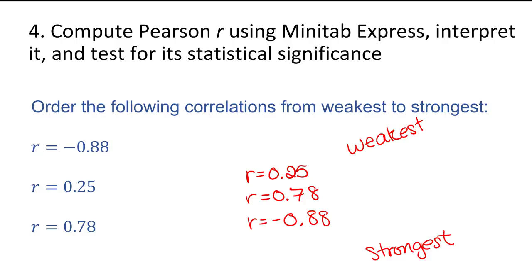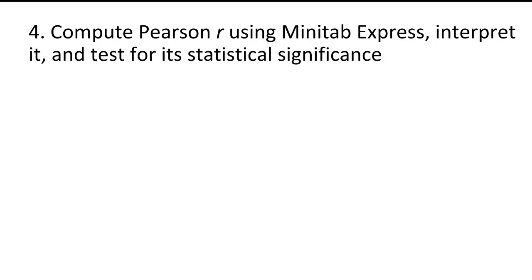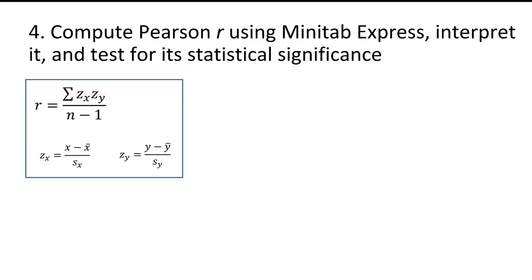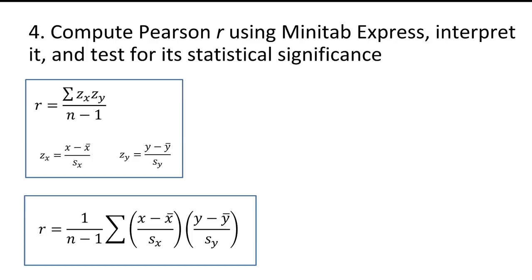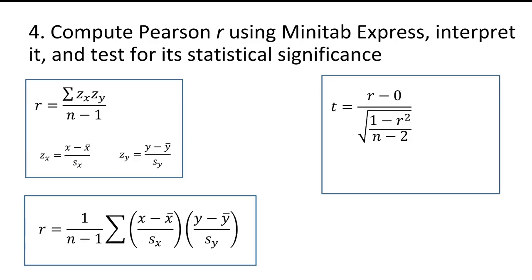There are a few formulas to review, though you won't need to do hand calculations on the lab, quiz, or exams. The preferred formula for Pearson's R shows its relationship to Z-scores. Once you have R, it can be converted to a t-test statistic: t equals R minus the null parameter, divided by the standard error. Usually the null is that R equals 0, so the numerator simplifies to just R. The t-distribution for Pearson's R has degrees of freedom equal to the sample size minus 2.